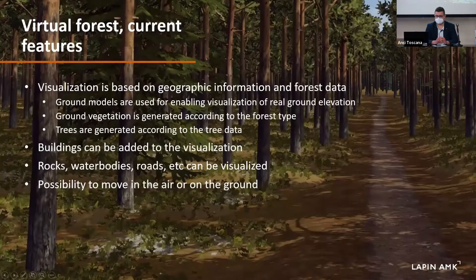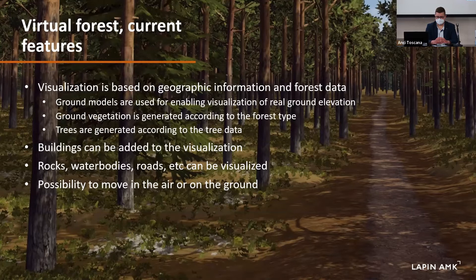The visualization is mostly based on geographic information and forest data. We use real ground models to enable visualization of real ground elevation. Ground vegetation is generated according to the forest type, and trees are generated according to the tree data — different forest types produce different lower vegetation. We can also add buildings and other man-made objects to the visualization. Rocks, water bodies, roads, and other kinds of obstacles can also be visualized. The user can move in the air or on the ground within the visualization.